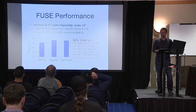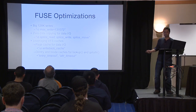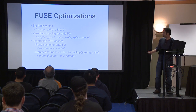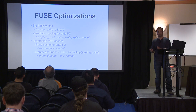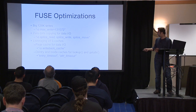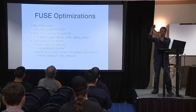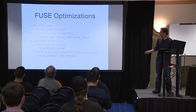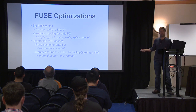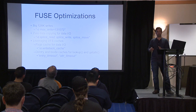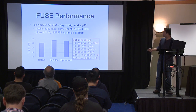Fortunately, Fuse has some optimization parameters you can use. For example, you can use entry timeout and attribute timeout to ask the Fuse driver to cache lookup requests and get attribute requests in the kernel. If the kernel is caching many of these requests, you'd expect fewer requests being delivered to the Fuse daemon. Similarly, you can use splice read/write to reduce the number of data copies for I/O. Let's see what happens when you enable these optimizations.